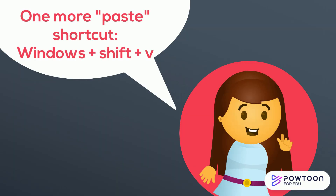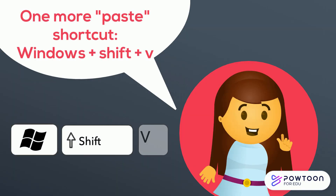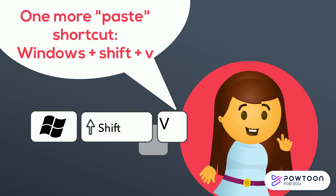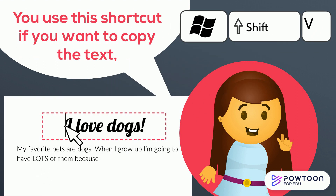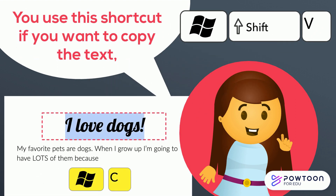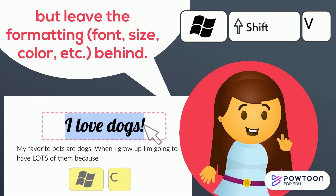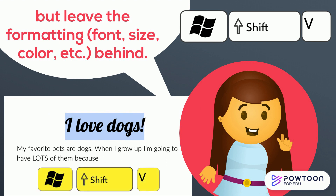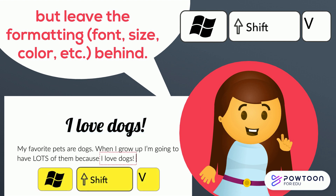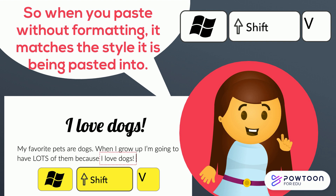There's another helpful paste keyboard shortcut: Windows Shift V. You use this shortcut if you want to copy the text but leave the formatting — the font, size, color, etc. — behind. So when you paste without formatting, it will match the style that it's being pasted into.